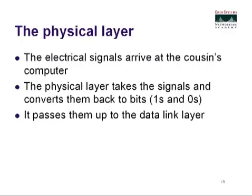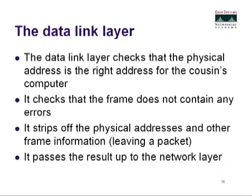Now the email has made the journey and reaches her cousin's computer — we have to reassemble the data. Electrical signals arrive at the cousin's computer; the physical layer converts the signals back to bits and passes them up to the data link layer. The data link layer checks that the physical address is correct for the cousin's computer and that the frame contains no errors. It strips off the physical address and other frame information, leaving a packet, and passes it up to the network layer.